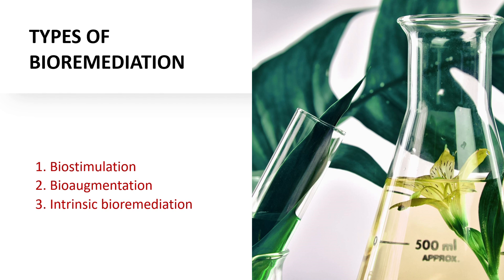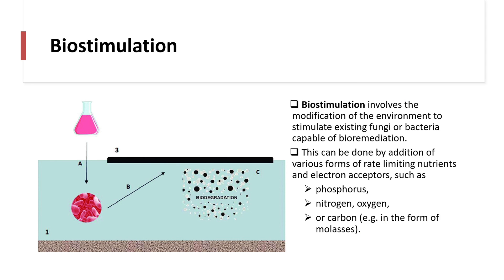There are different types of bioremediation: biostimulation, bioaugmentation, and intrinsic bioremediation. Biostimulation involves modification of the environment to stimulate existing fungi and bacteria capable of bioremediation. This is mainly brought about by the addition of rate-limiting nutrients and electron acceptors, such as phosphorus, nitrogen, oxygen, and carbon in the form of molasses, to stimulate the population of bioremediators in the soil or water.